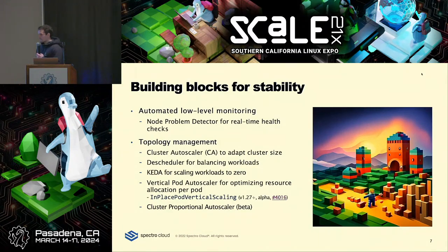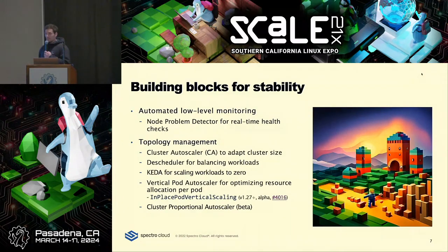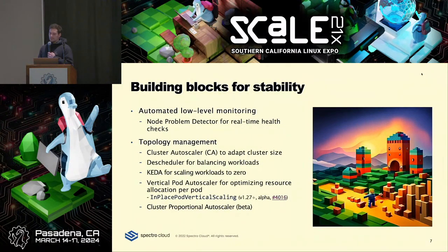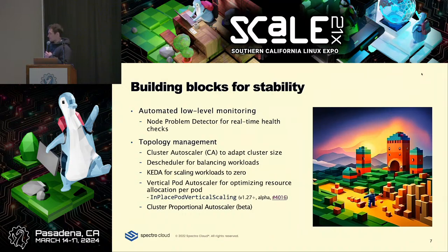KEDA — Kubernetes Event-Driven Autoscaling — is something I have to mention in a talk about Kubernetes scaling. It builds off of the horizontal pod autoscaler, which is a native Kubernetes primitive, and allows you to scale based on external metrics. It integrates with dozens of external systems like AWS SQS and all the public clouds. You might want to scale based on queue length, and it supports scaling to zero — if there are no messages in a queue, you can bring your deployment to zero replicas and bring it back up accordingly.